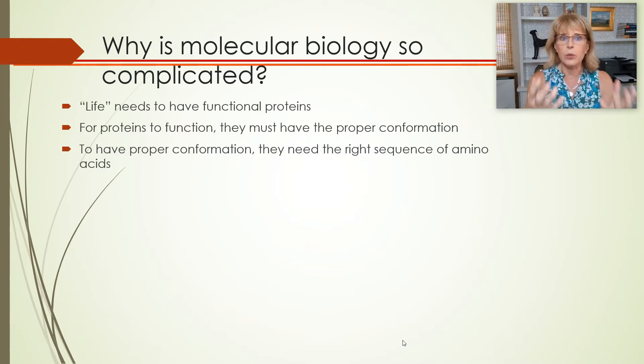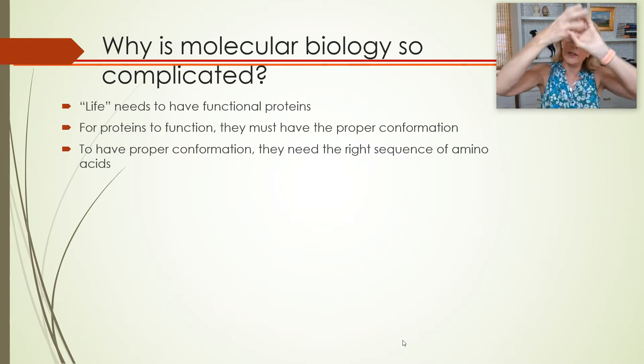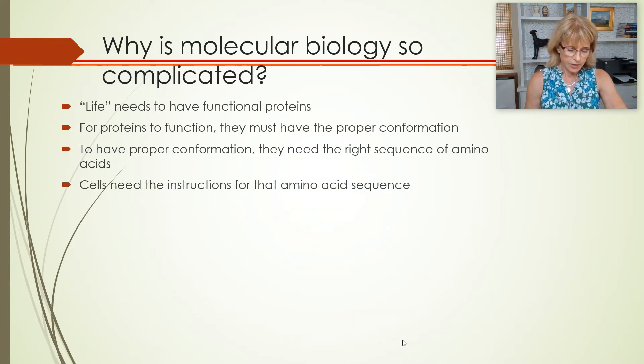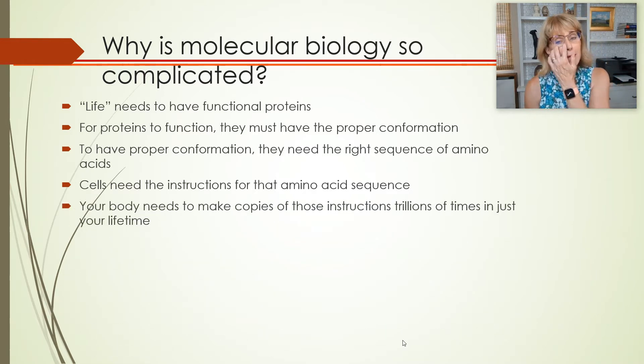If a protein is going to have the right conformation, they need to have the right sequence of amino acids, since it is the order of the amino acids that dictates the way they interact with each other that dictates the shape or conformation of the proteins. The cells need to have the instructions for that amino acid sequence. Your body needs to make copies of those instructions trillions of times, even in just your lifetime.